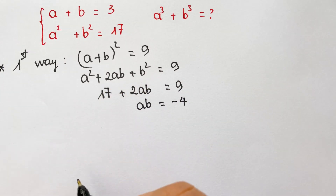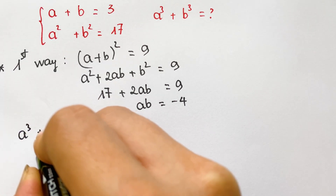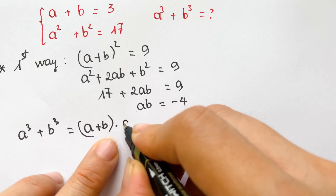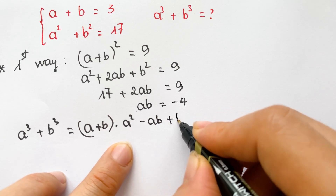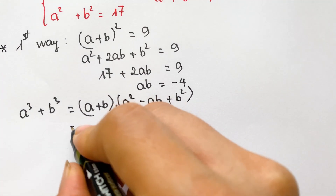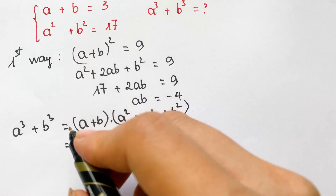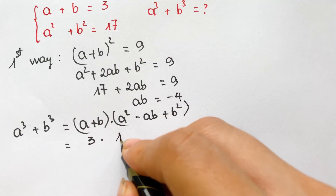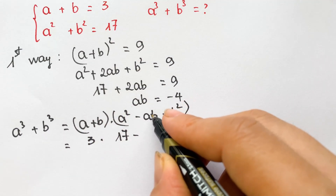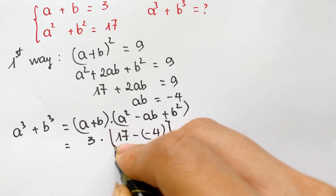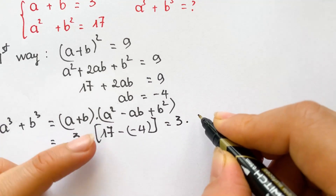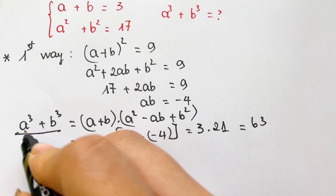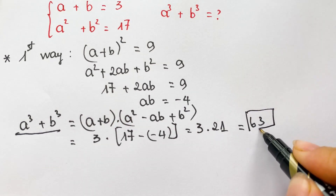We can solve that. And so a cube plus b cube is equal to the identity: a plus b times a squared minus ab plus b squared. We need to replace here with the numbers. a plus b is equal to 3, a squared plus b squared is equal to 17, and minus ab is equal to minus 4, so that gives 17 plus 4 equals 21. And so 3 times 21 is equal to 63. So we have a cube plus b cube is equal to 63.